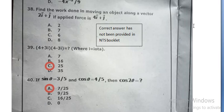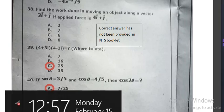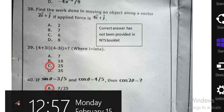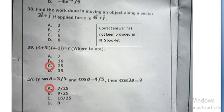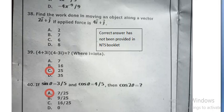4 plus 3i into 4 minus 3i equals 25, option C.